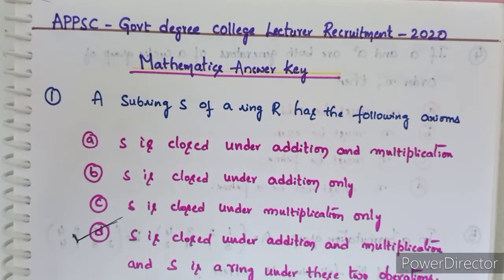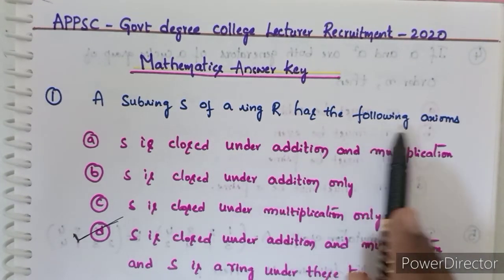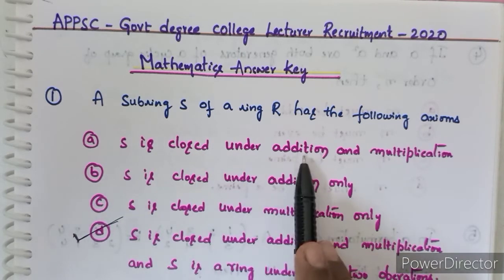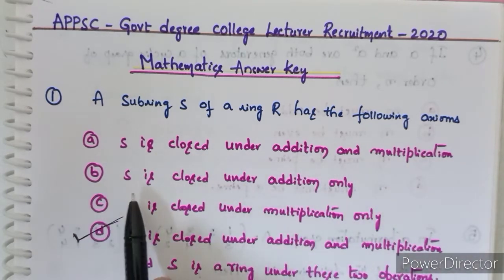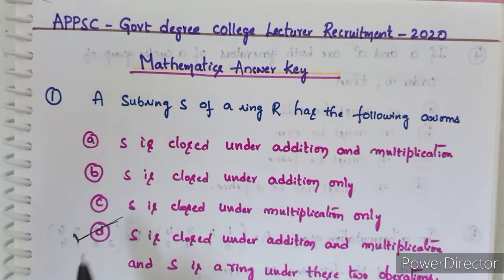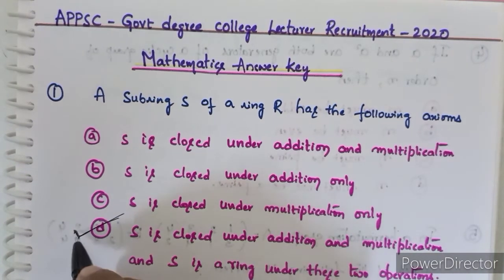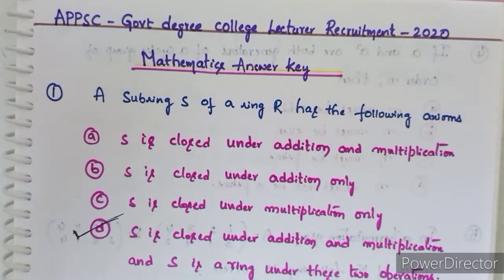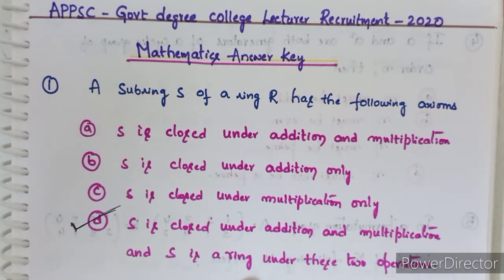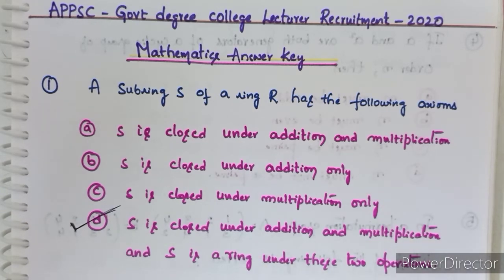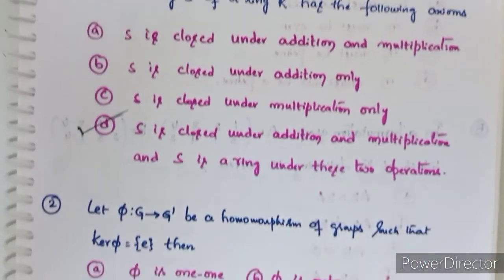First question: a subring S of a ring R has which of the following axioms? Option A: S is closed under addition and multiplication. Option B: S is closed under addition only. Option C: S is closed under multiplication only. Option D: S is closed under addition and multiplication, and S is a ring under these two operations. Option D is correct. The subring must satisfy all the properties of the ring — that subset must itself be a ring.